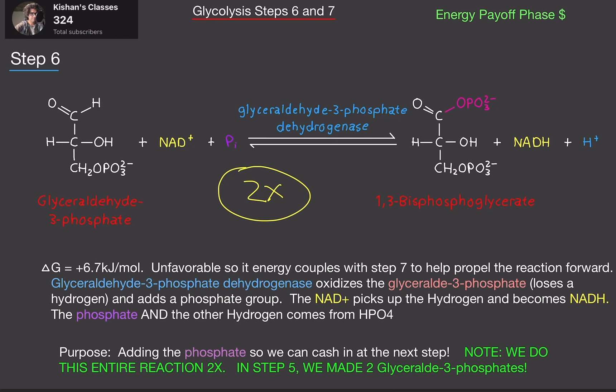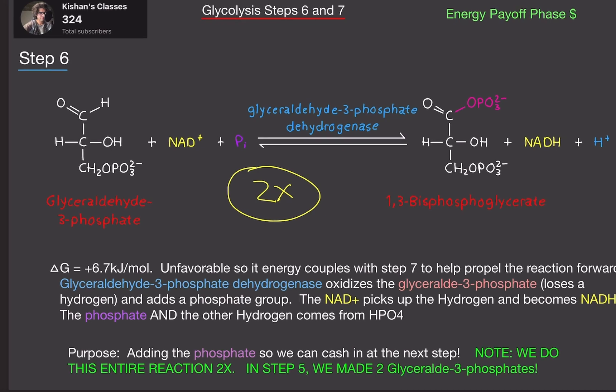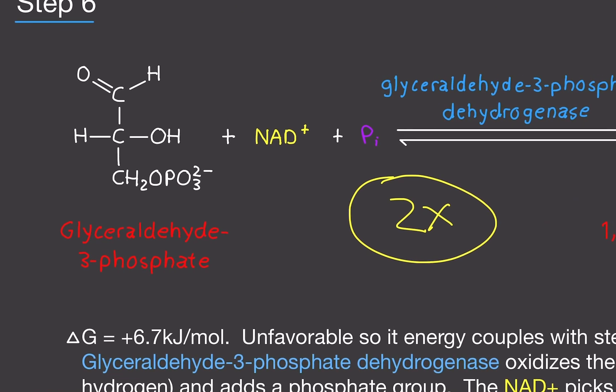In the previous step, I mentioned that we generated two molecules of glyceraldehyde 3-phosphate. So that's what step 6 is going to involve.